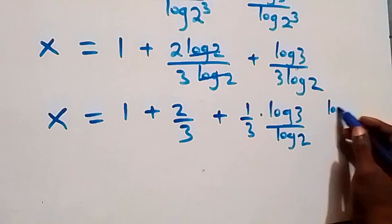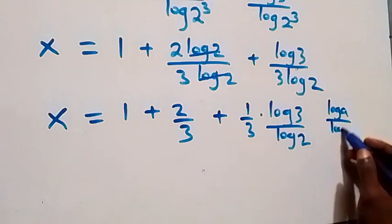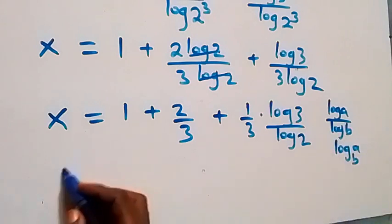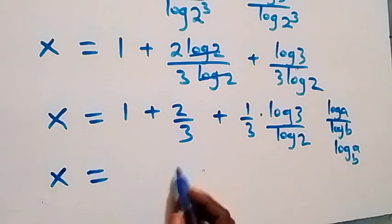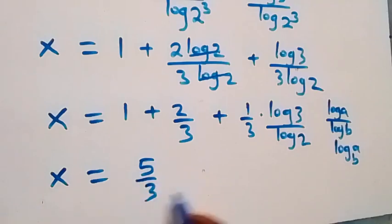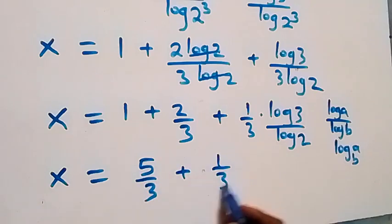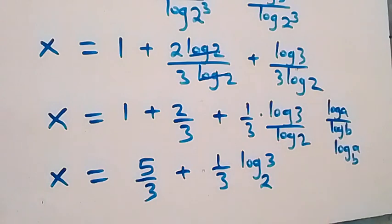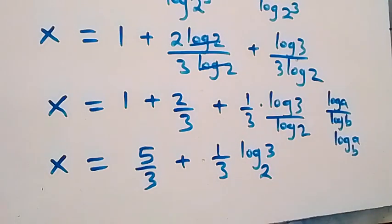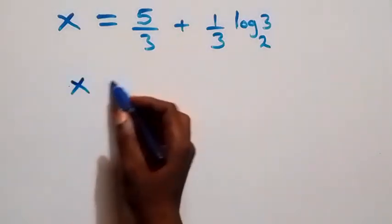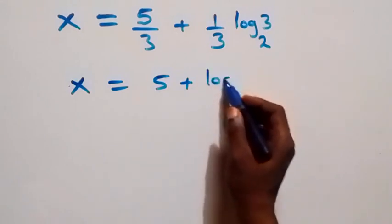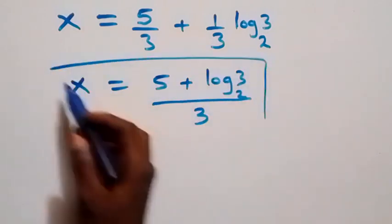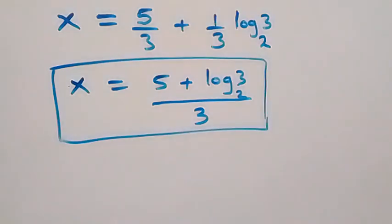Using the change of base formula — log(a)/log(b) = log_b(a) — we have log(3)/log(2) = log₂(3). So x = 1 + 2/3 + (1/3)·log₂(3), which equals 5/3 + (1/3)·log₂(3). This can be rewritten as x = (5 + log₂3) / 3.